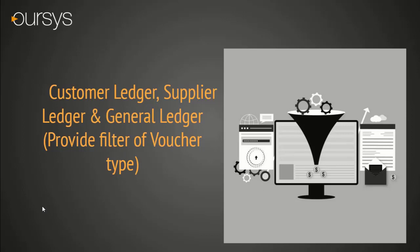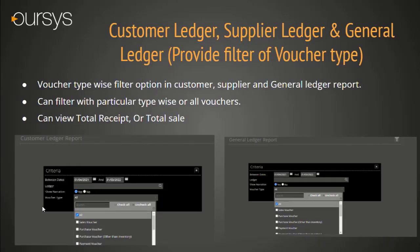Customer Ledger, Supplier Ledger, and General Ledger filter. This is the most useful functionality added in this version. In the ledger report, a new filter option has been introduced — that is the Voucher Type. Now you can filter records with a specific voucher type, such as only Received or only Payment, helping you refer to only those records you need to see.